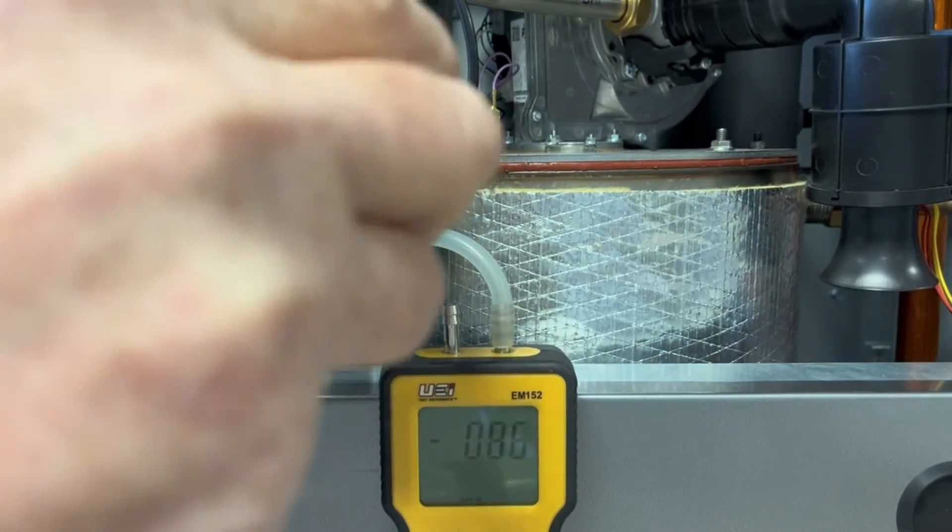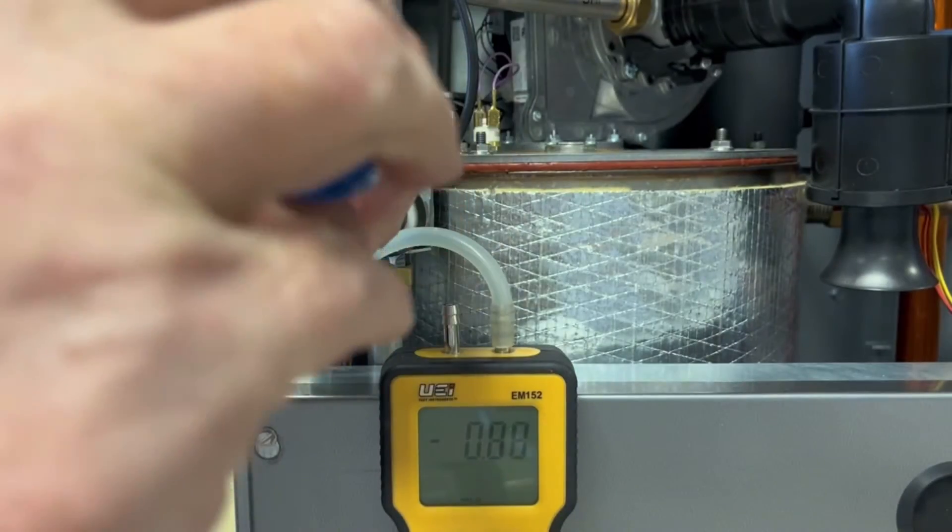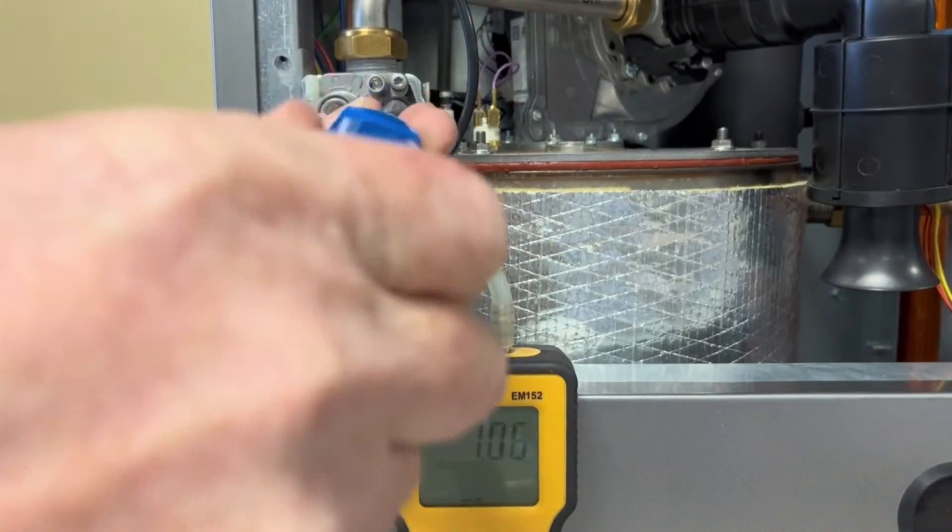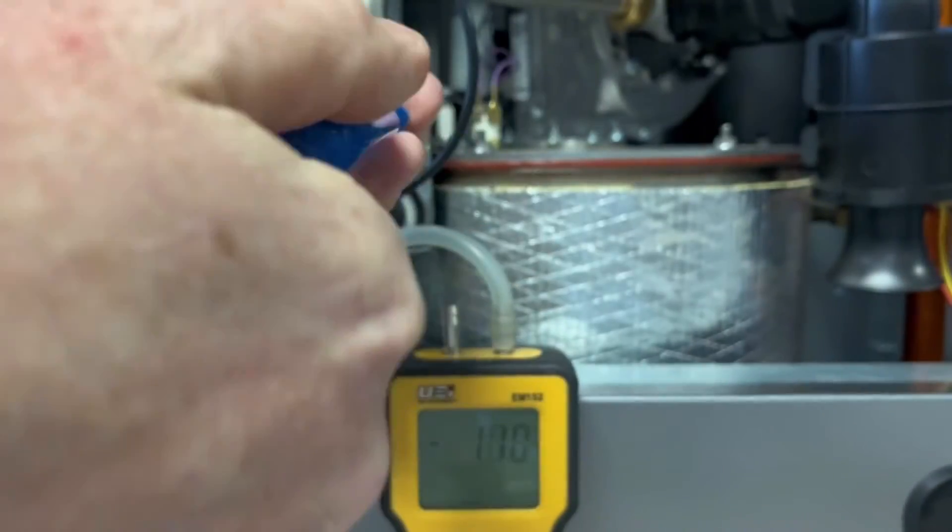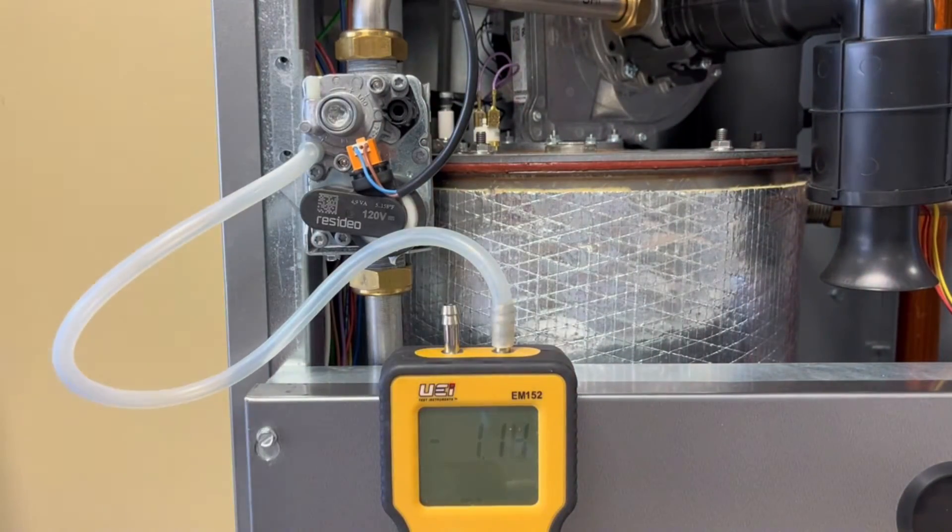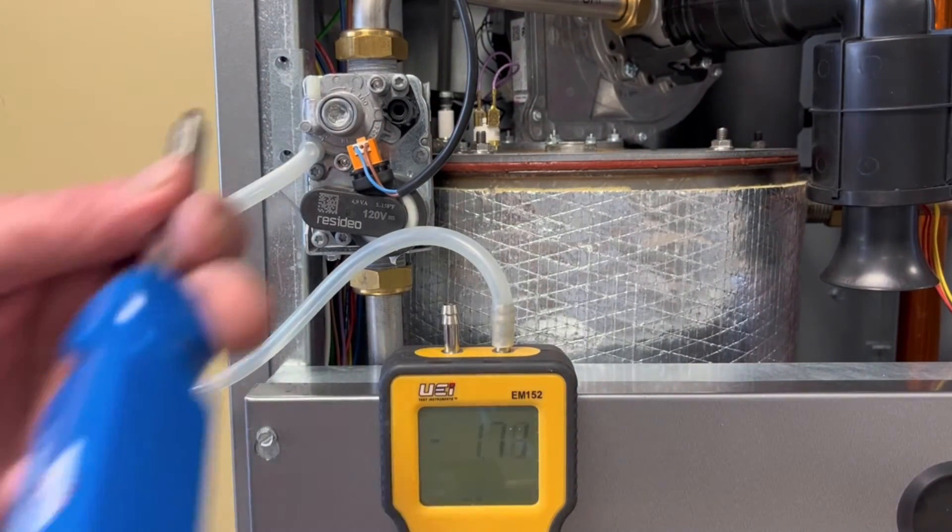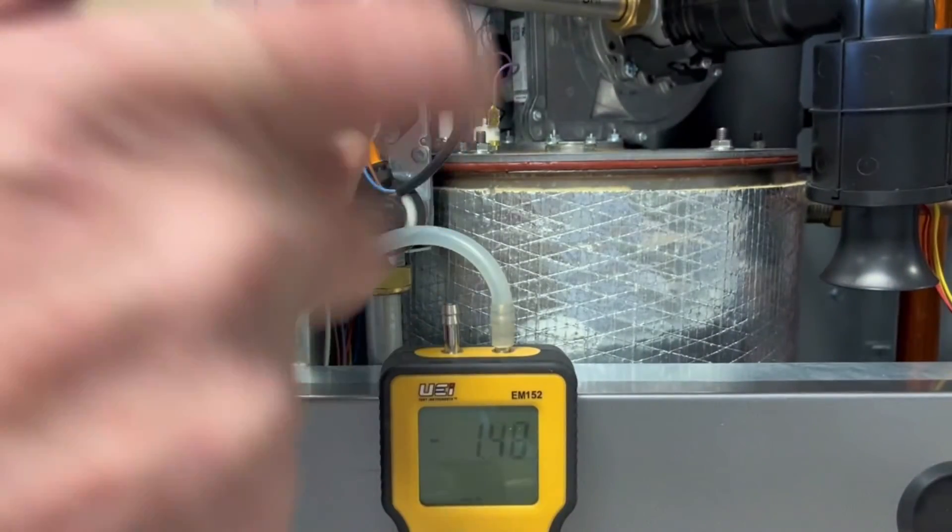Now carefully turn the screw counterclockwise for complete revolutions. This should bring the valve to an approximate factory setting. Now you can complete your high fire combustion analysis and set the valve for the specifications in the manual.